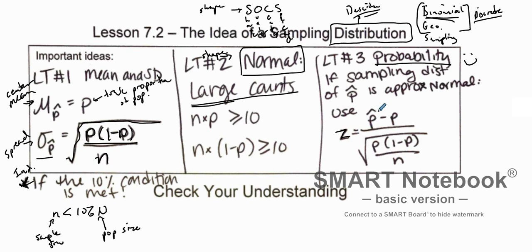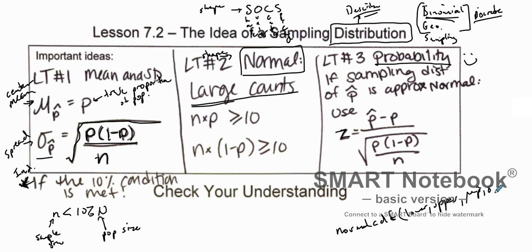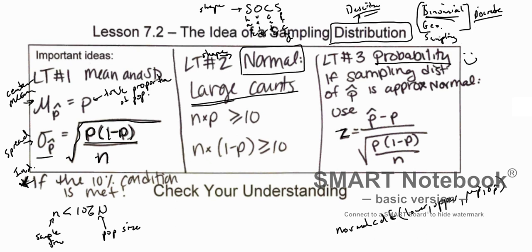If the sampling distribution of our sample proportion is approximately normal, we can figure out probabilities using Z or standard scores. We change this by taking our observed value minus our proportion or parameter divided by the standard deviation of our sampling distribution. We can also use normal CDF with a lower bound, upper bound, mean, and standard deviation — all coming back full circle and applying it to sampling distributions.